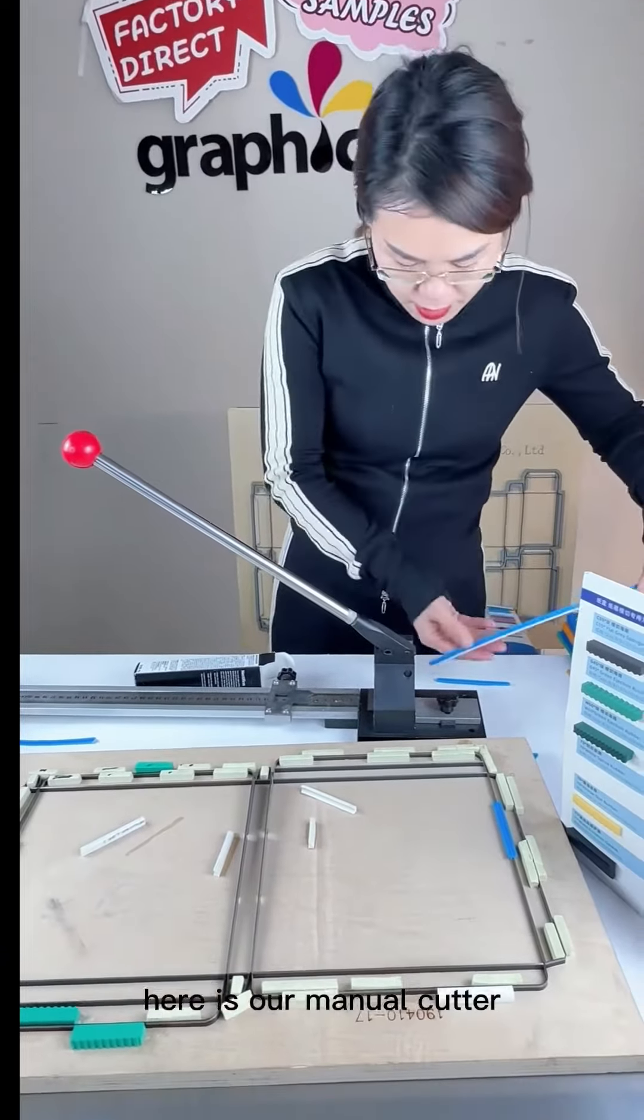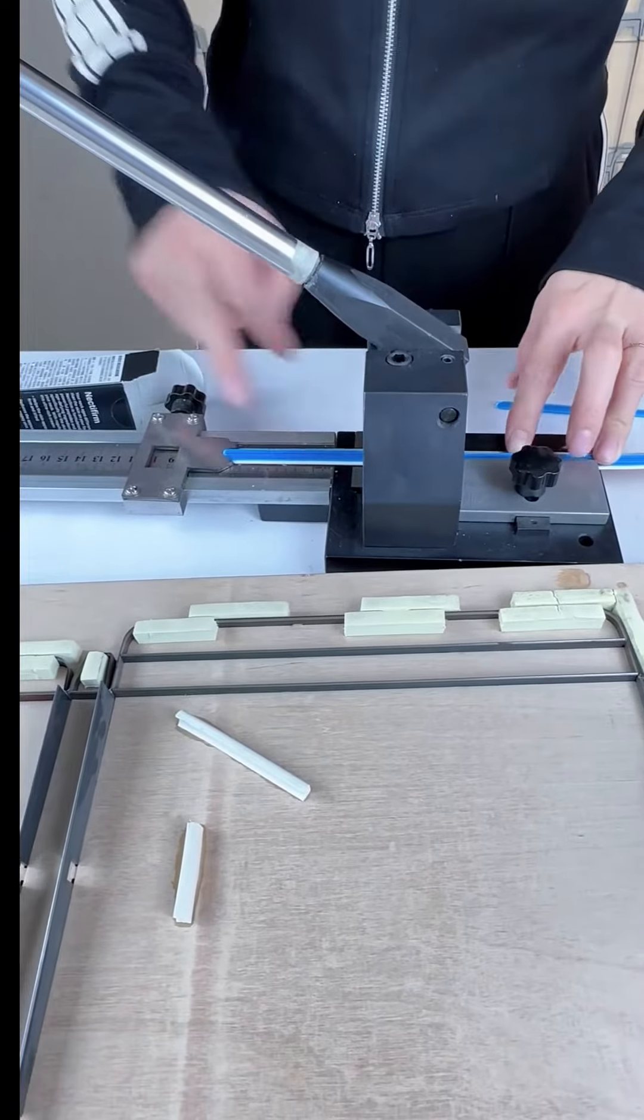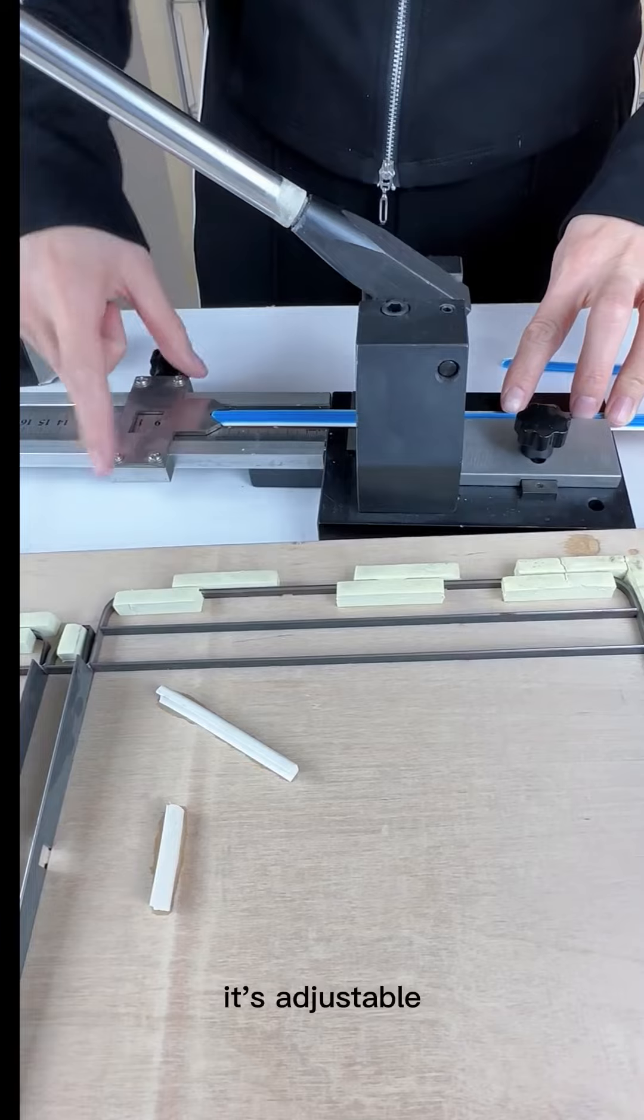Here is our manual cutter. Then we can cut in this way. This is the ruler. It's adjustable.